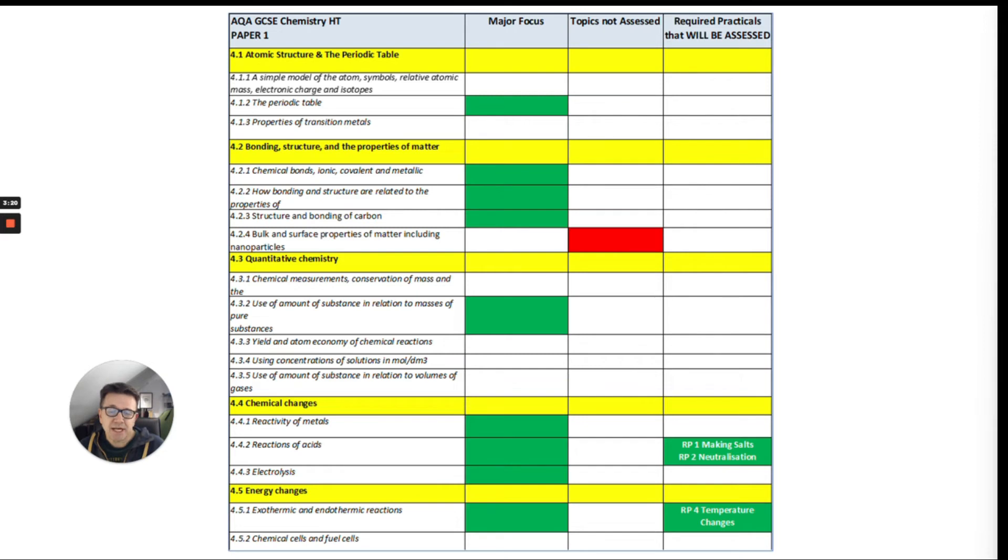And any energy changes as well looks like an important part of work for exothermic and endothermic reactions and also the temperature change required practical. Notice there is only one topic that is not assessed or not linked. And that is bulk and surface properties of matter, including nanoparticles. So you can see the required practicals. You need to know one, two and four.